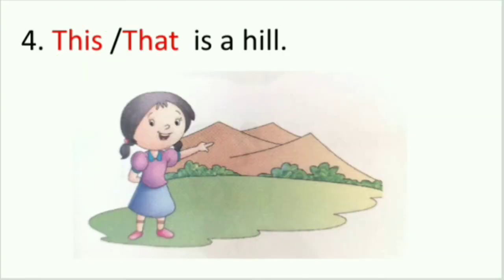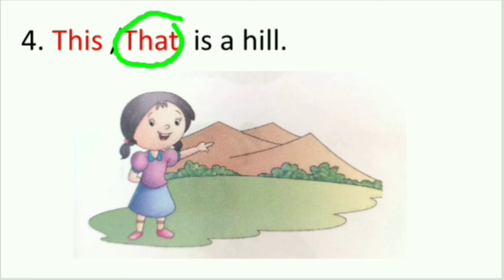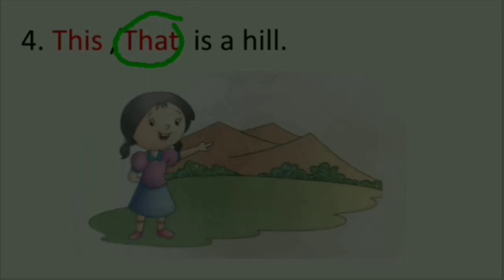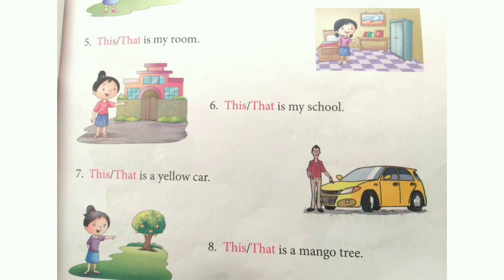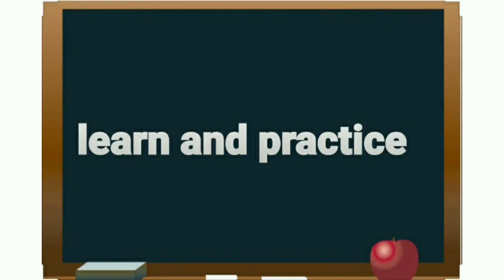The fourth one: (this / that) is a hill. A girl is pointing at the mountain or hill which is very far away, so we circle T-H-A-T, 'that'. The fifth, sixth, seventh, and eighth are your homework — learn and practice. Thank you.